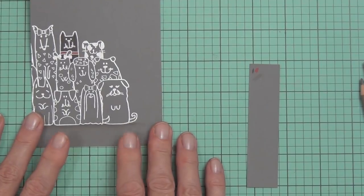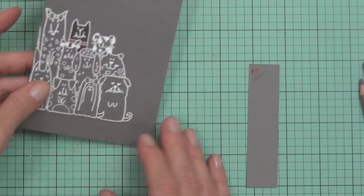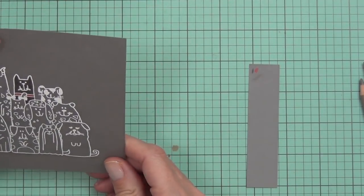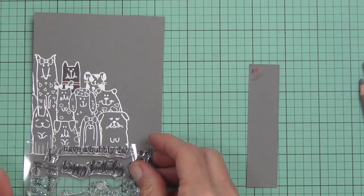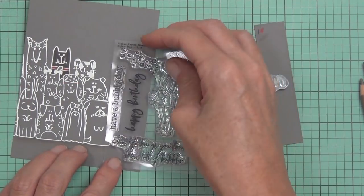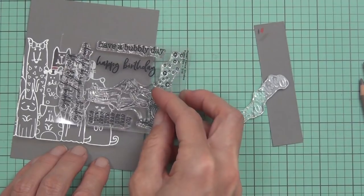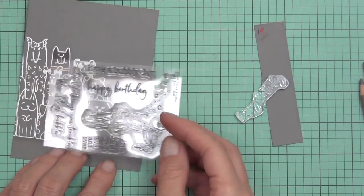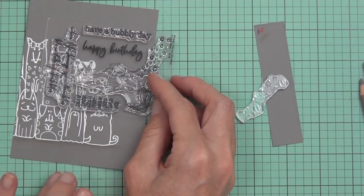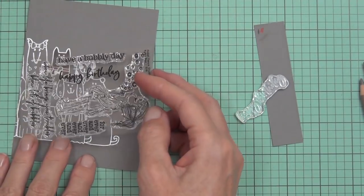But I did want to add a sentiment. I thought about keeping it very clean and simple, but initially I've got the happy birthday sentiment from another cute Picket Fence stamp set—one with a girl blowing bubbles. I'm thinking about placement again.